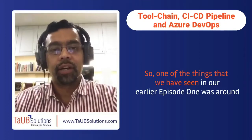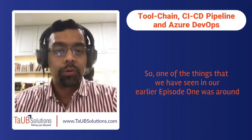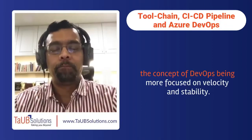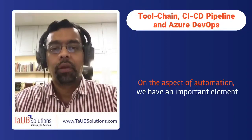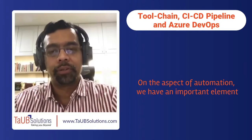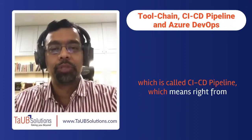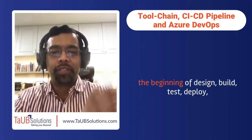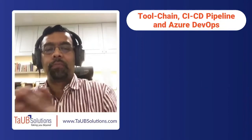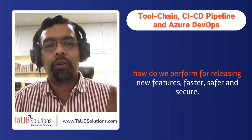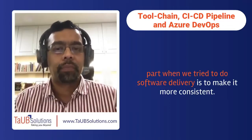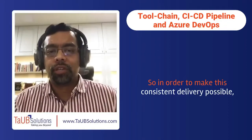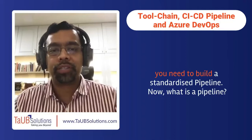One of the things we have seen in our earlier episode was around the concept of DevOps being more focused on velocity and stability. On the aspect of automation, we have an important element called the CICD pipeline, which means right from the beginning of design, build, test, deploy — how do we perform for releasing new features faster, safer, and secure? One of the most important parts when we try to do software delivery is to make it more consistent, and in order to make this consistent delivery possible, you need to build a standardized pipeline.